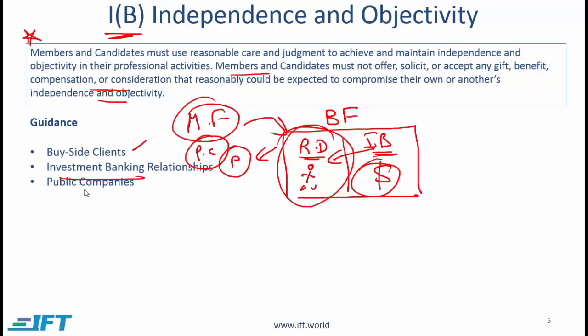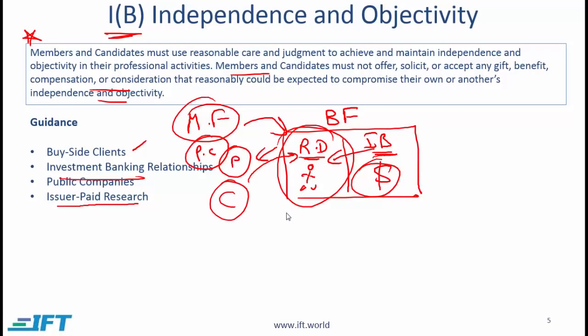Another influence might come directly from public companies. Pfizer, for example, might directly try to influence you through gifts or other potential benefits and encourage you to write favorable reports. Next, there is issuer-paid research. Say a company that is not widely followed approaches you to write a research report and is paying you to write it. Clearly there will be potential conflicts of interest, and obviously the company would want you to write a favorable report.